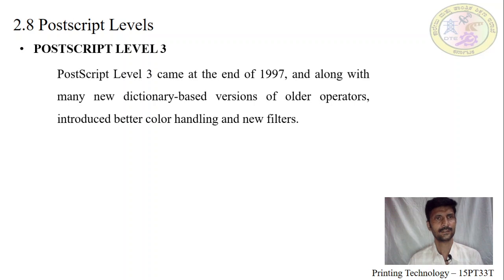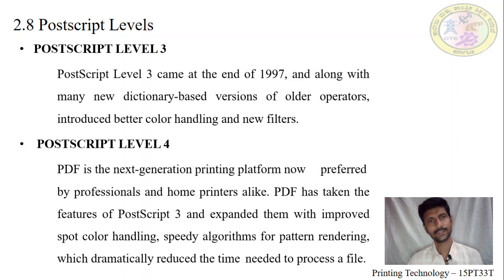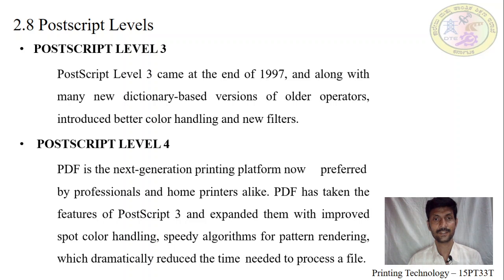In PostScript Level 3, introduced in 1997, it is the latest version compared to Levels 1 and 2. It combines the above levels along with better color handling, new filters, and text support. PostScript Level 4 is the printing platform of the new generation. It supports all the above levels along with PDF and color handling. A speedy algorithm and pattern processing dramatically reduce the processing time.